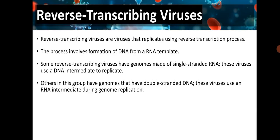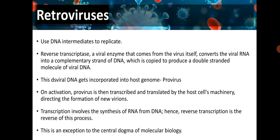Reverse transcribing viruses replicate using reverse transcription — the formation of DNA from an RNA template. Some have single-stranded RNA genomes and use a DNA intermediate to replicate; others have double-stranded DNA genomes and use an RNA intermediate. Retroviruses use DNA intermediates. The reverse transcriptase enzyme converts viral RNA into a complementary strand of DNA, which is copied to produce double-stranded viral DNA. This double-stranded viral DNA is incorporated into the host genome as a provirus. On activation, the provirus is transcribed and translated by the host cell's machinery, directing formation of new virions.